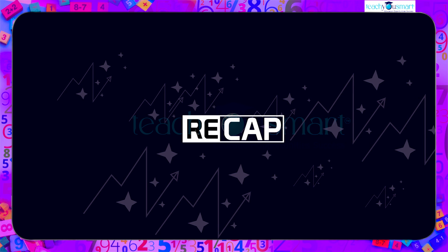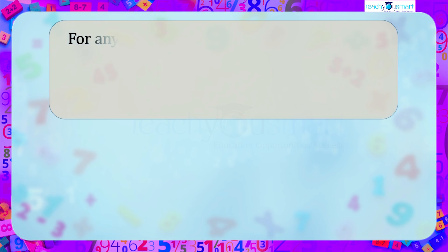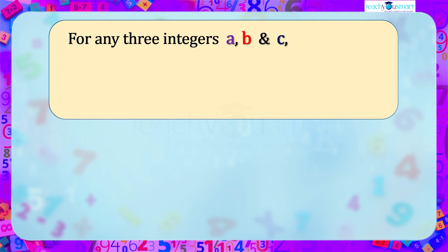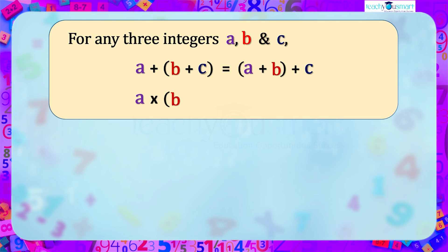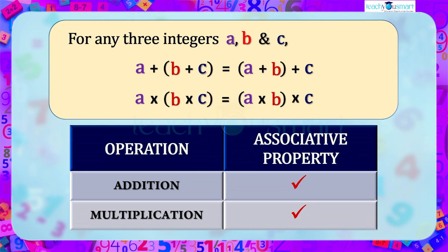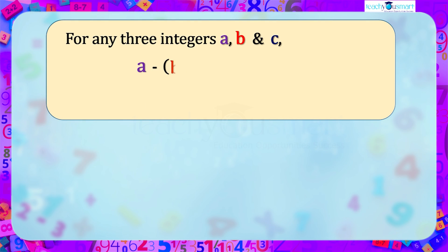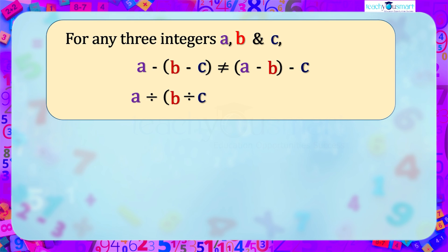Let's recall what we discussed today. For any three integers a, b, and c: (a plus b) plus c equals a plus (b plus c), and (a multiplied by b) multiplied by c equals a multiplied by (b multiplied by c). While (a minus b) minus c is not equal to a minus (b minus c), and (a divided by b) divided by c is not equal to a divided by (b divided by c).